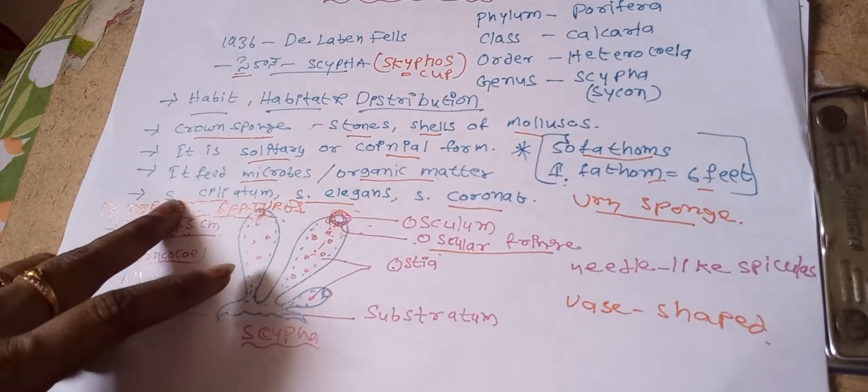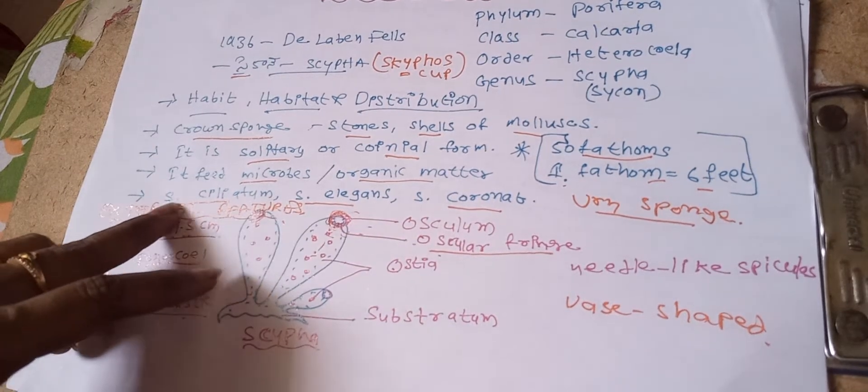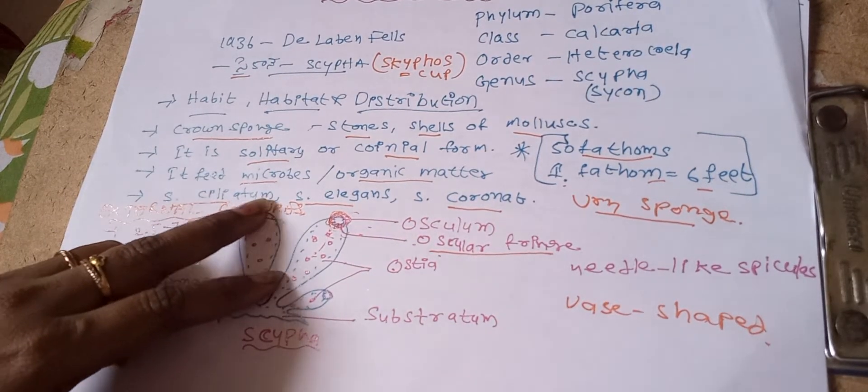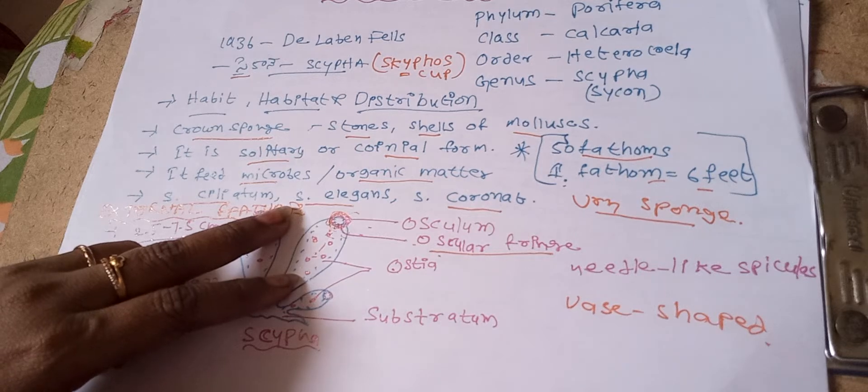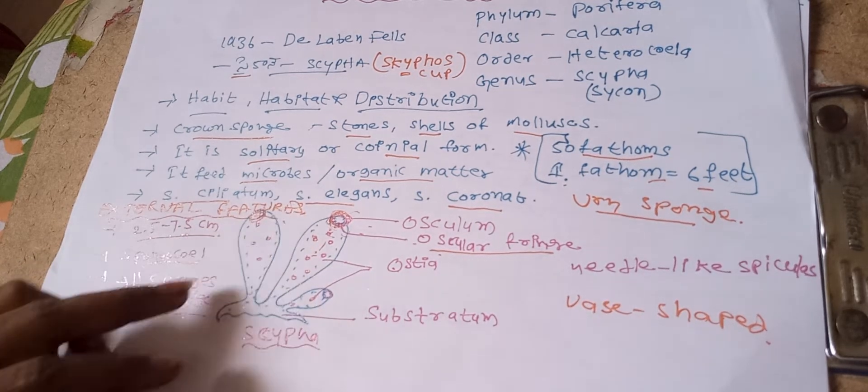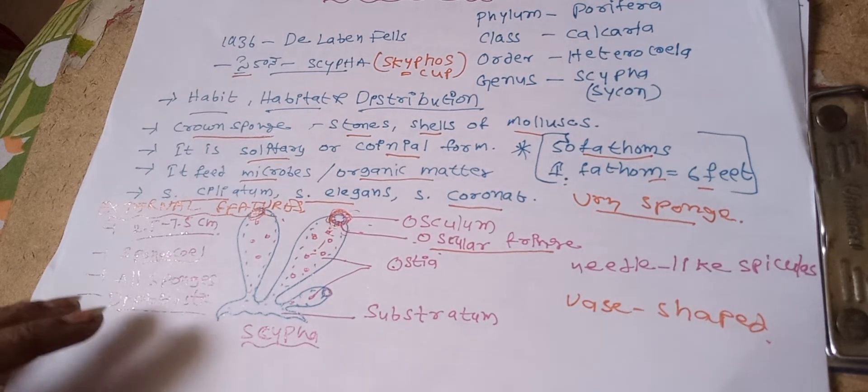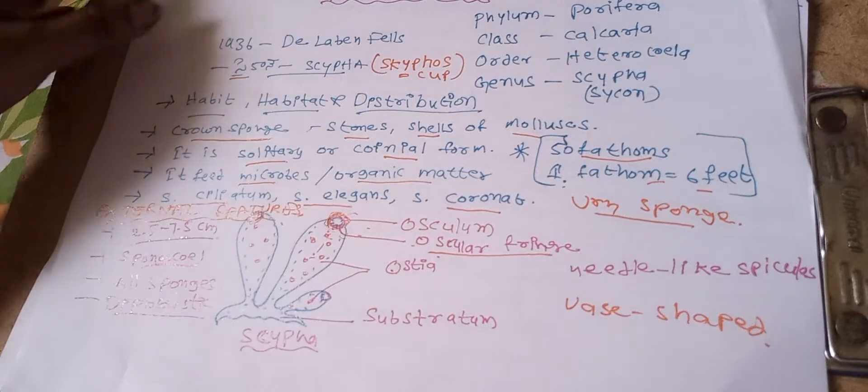It feeds on microbes and organic matter. It is commonly called as urn sponge. It is distributed worldwide, best known in North Atlantic shores. Many genus are present: Scypha elongata, Scypha coronata, Scypha ciliata, Scypha gelatinosa, and Scypha raphanus in North Atlantic shores.